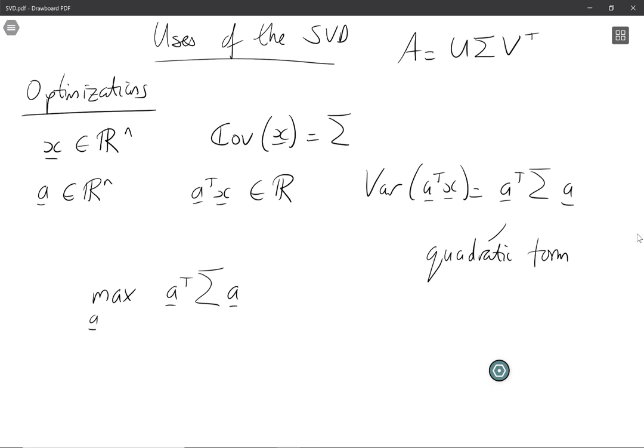Now that question as written is not interesting because if I multiply a by some constant it's going to make the quadratic form a transposed Σ a bigger. So we have to put constraints on this.